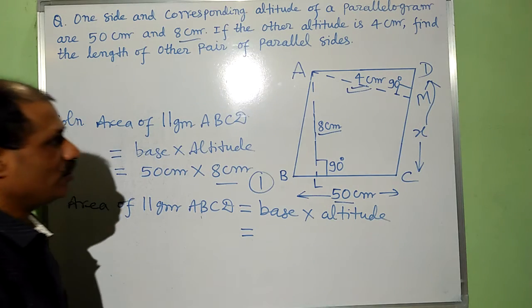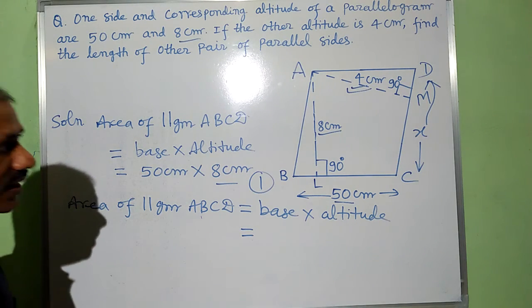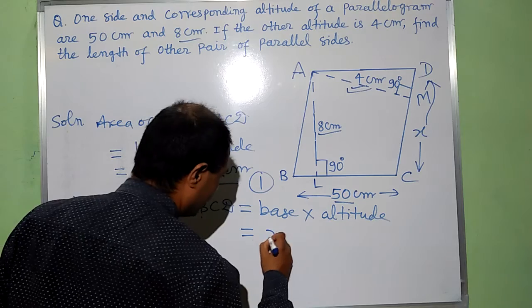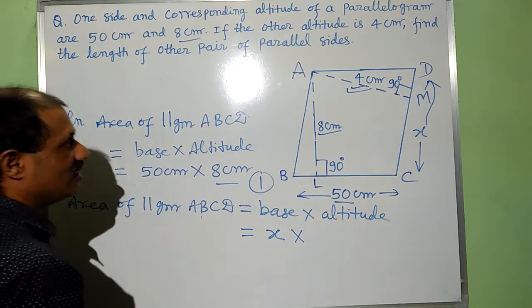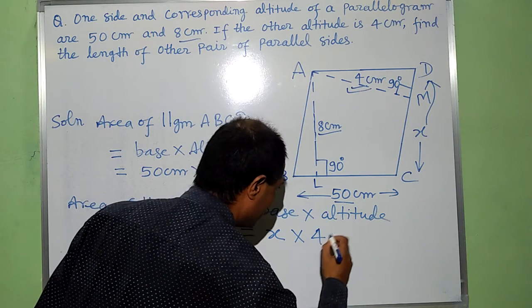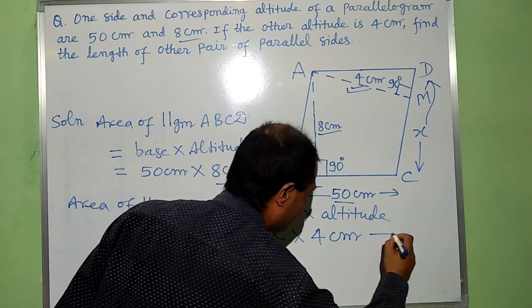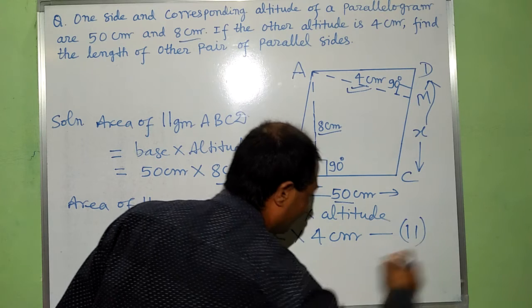Here I suppose CD is X, this is base, and its corresponding altitude, that is 4 cm. This is equation 2.